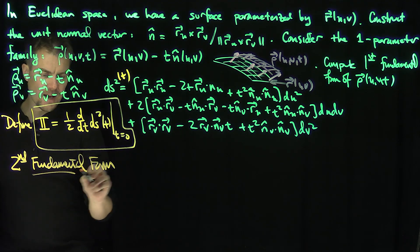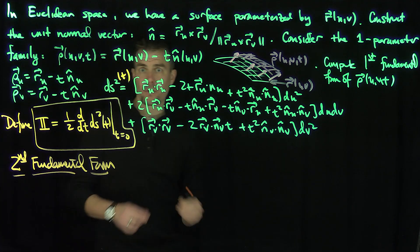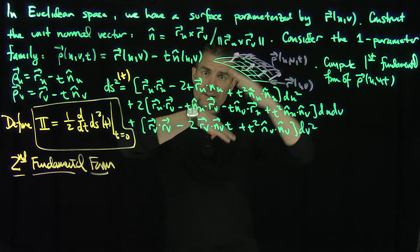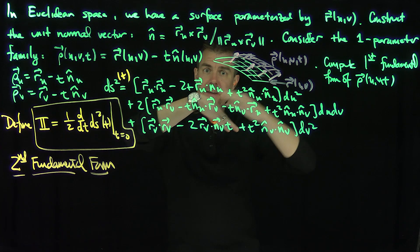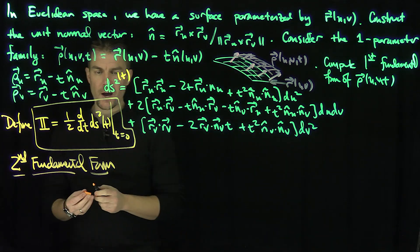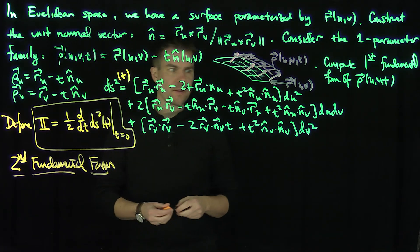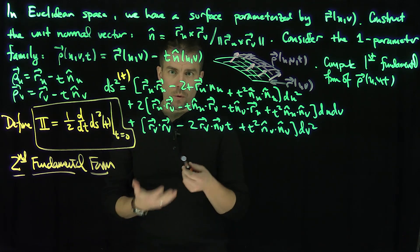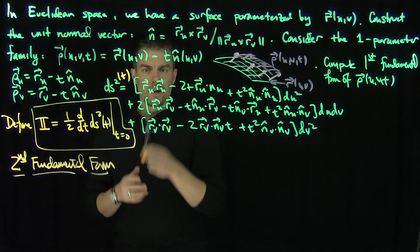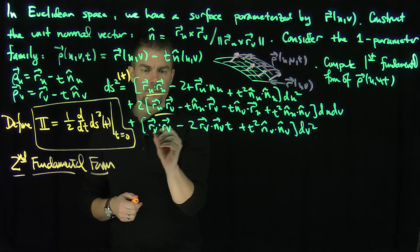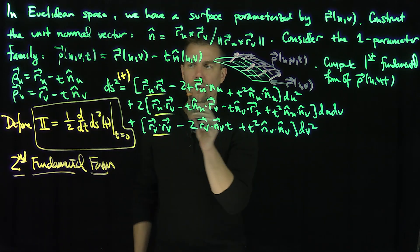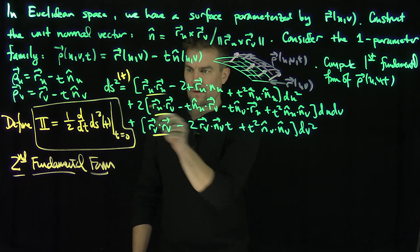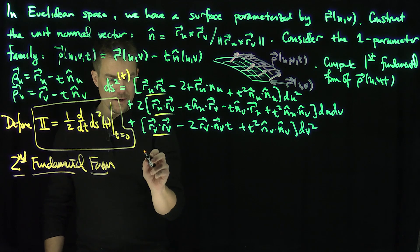The second fundamental form measures how much the first fundamental form of this parameterized family of surfaces is changing as you translate these surfaces in the normal direction at each point. For the calculation, I just need to look at the first order terms in t — the constant terms vanish, and the one half is there to counteract the factor of two from the linear terms.